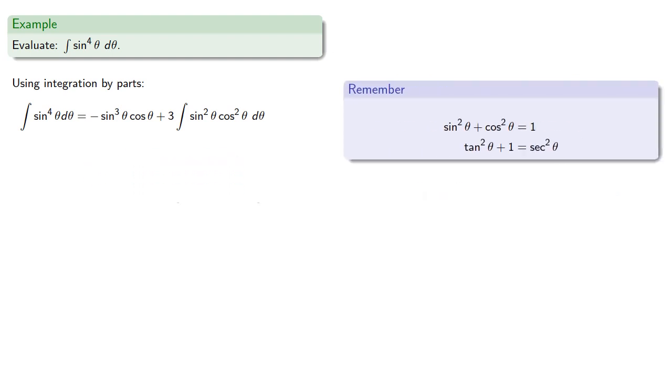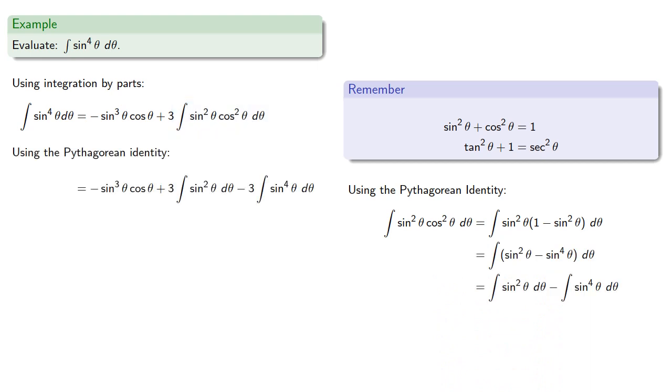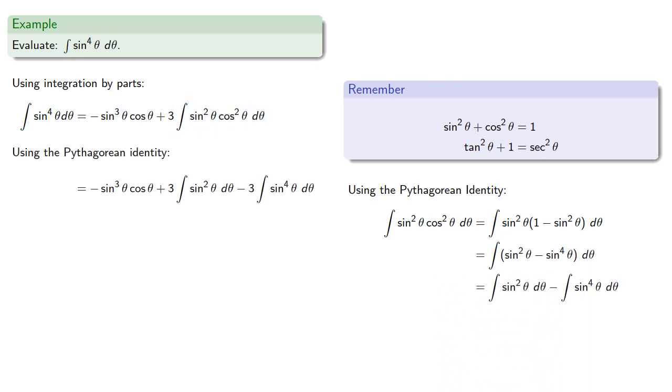Using the Pythagorean identity, we can rewrite cosine squared and simplify. Now we have the integral of sine to the fourth on both sides, so we can solve for it.